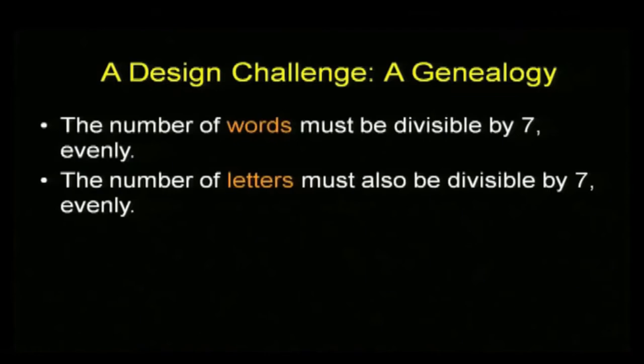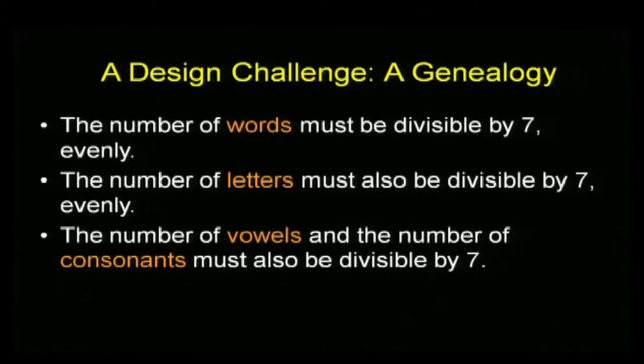It's not hard to do, especially in English — you can fudge it around. Except I've got another condition: I want the number of letters you use, if you count them up, to be divisible by seven exactly. Now that's a little tougher, because you might get the words to come out, but you need to get the letters to come out too. But by fudging around, you could probably do that. Except I also want the number of vowels and the number of consonants each to be a multiple of seven.